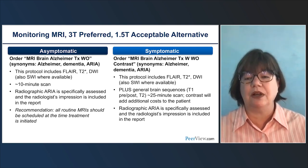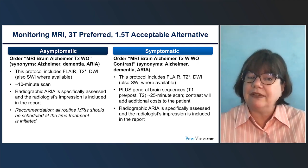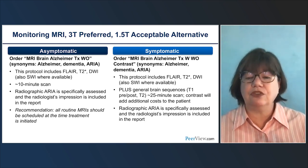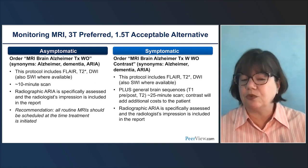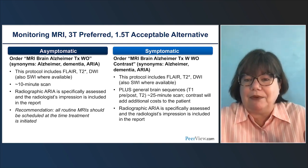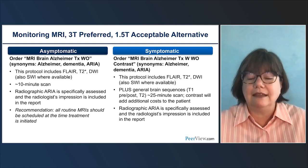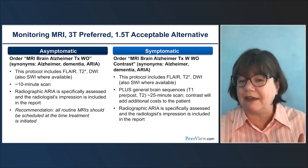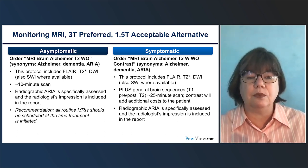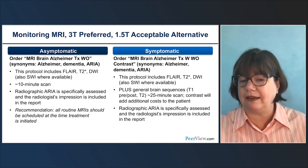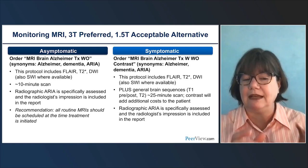If a patient is symptomatic, we do an expanded protocol. Symptoms like headache, dizziness, confusion, or GI symptoms require a full brain MRI with a broad differential, and we recommend contrast just as for any symptomatic patient. Make sure the consistent core sequences are embedded in that protocol so comparisons are apples-to-apples. A symptomatic scan takes approximately 25 minutes. Both asymptomatic and symptomatic scans should explicitly report ARIA findings, and we'll discuss in detail how to make measurements and categorize them.